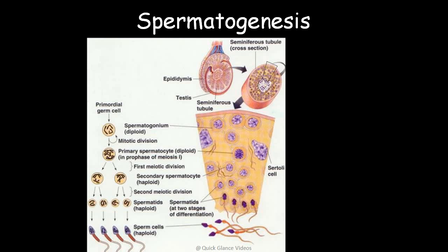Now let's see this process in diagrammatic format. Looking at a cross section of the testicle, we start with primordial germ cells which are diploid. These undergo mitotic division, then the first meiosis — the reduction division — produces haploid cells. The second meiotic division gives rise to four haploid spermatids, which are then converted into sperms. The Sertoli cells provide nourishment throughout.